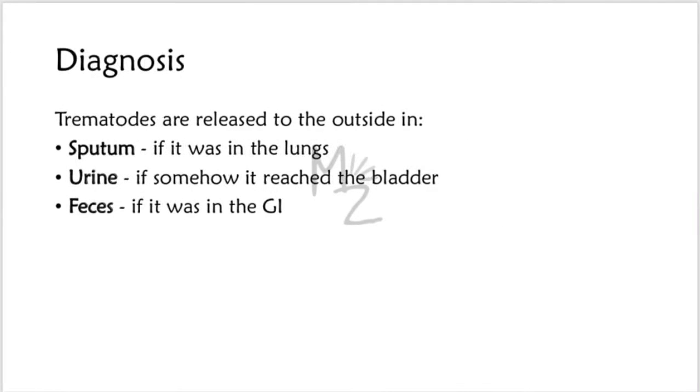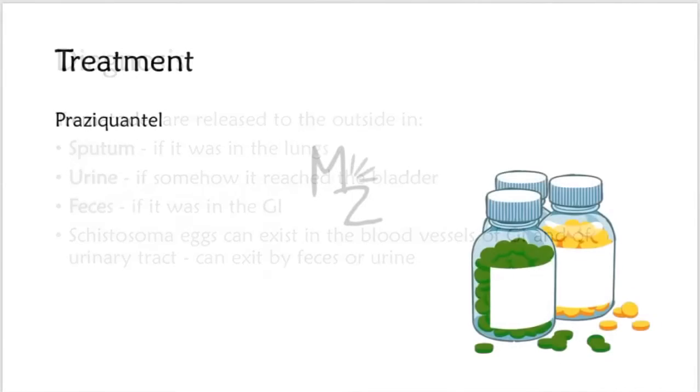Life cycle. Self-fertilization takes place, as this organism is a hermaphrodite, except for schistosome. Trematodes are released to the outside in sputum if they were present in lungs and were causing infection there. They are released to outside in urine if somehow they reached the bladder, and in feces if they were causing infection in GI, the gastrointestinal tract.